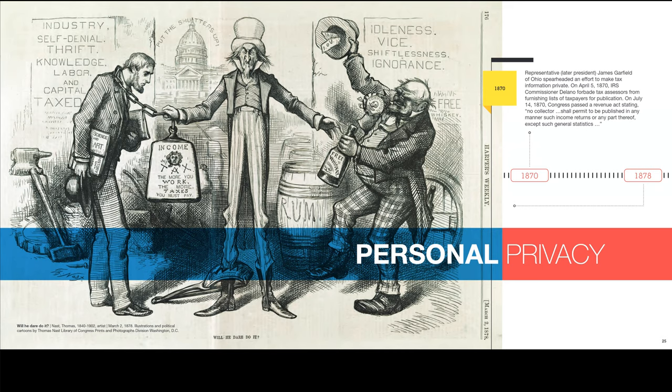Personal privacy: Representative James Garfield of Ohio spearheaded an effort to make tax information private. On April 5, 1870, IRS Commissioner Delano forbade tax assessors from furnishing a list of taxpayers for publication — they used to publish a full list of taxpayers. Congress then passed a Revenue Act stating no collector shall permit to be published any income returns or any parts thereof except general statistics. Privacy was important even way back in 1870; people had a right to their personal privacy.